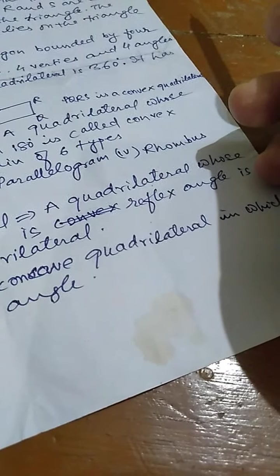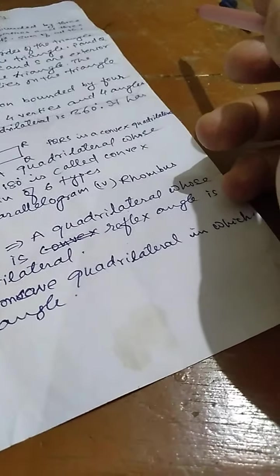Quadrilateral is mainly of 2 types, convex quadrilateral and concave quadrilateral. Now, what is convex quadrilateral and what is concave quadrilateral? Convex quadrilateral, a quadrilateral whose all angles are less than 180 degree is called convex quadrilateral. It has, again, of 6 types.